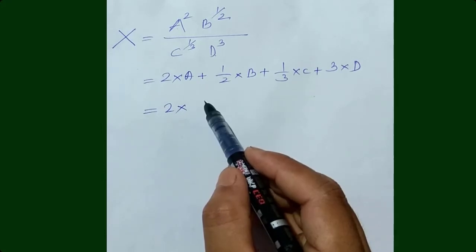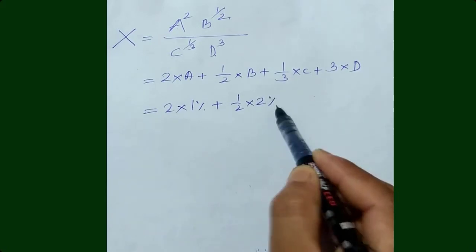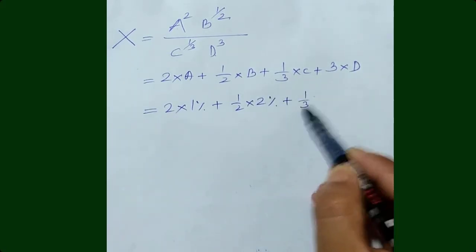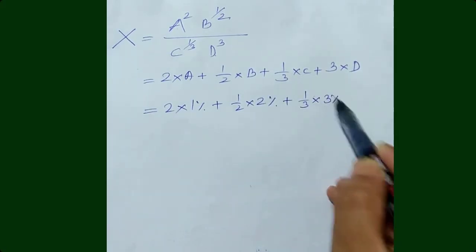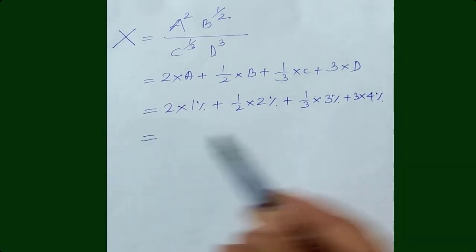Percentage error of A is given as 1%, B is given as 2%, C is given as 3%, and D as 4% respectively.